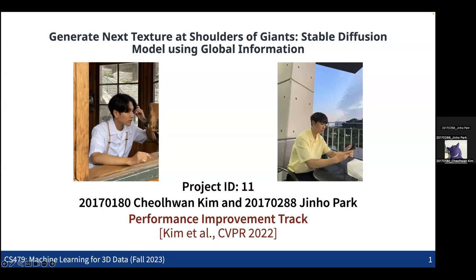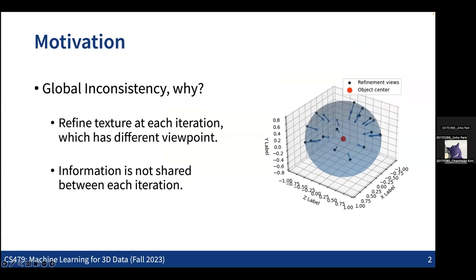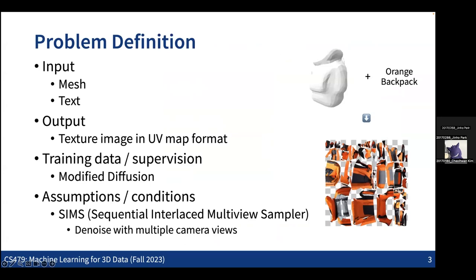Hi, we are Team 11, Shoulders of Giants. I'm Chorang Kim and this is Jino Park. In both of our baseline methods, there is no global consistency—information is not shared across viewpoints. Our model takes mesh and text as input, then generates a texture image in UV-map format.